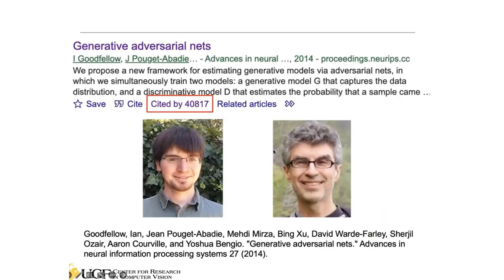It's worth noting that the generative adversarial network comes from a landmark paper whose first author is Ian Goodfellow and colleagues. You may also notice Yoshua Bengio, who won the Turing Award with Jeff Hinton and Yann LeCun. This paper has a huge number of citations — and that number keeps growing — showing how popular GANs have become across various domains.